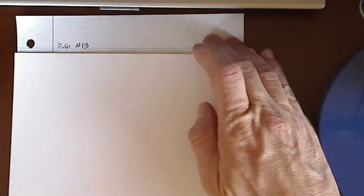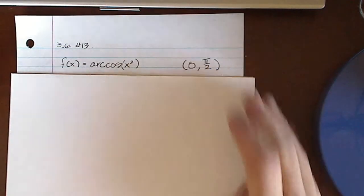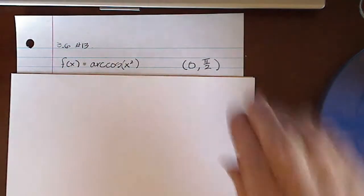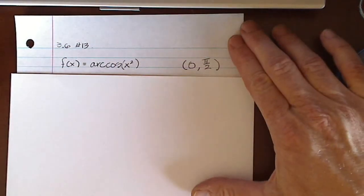Then use a graphing utility to graph the function and its tangent line at the point. So this is number 13 in section 3.6, and here is my function, f of x equals arc cosine of x squared, and my point is 0, pi over 2.